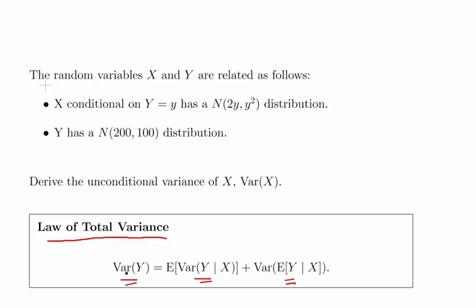The variance of Y can be written as the expectation of the conditional variance of Y dependent on X, plus the variance of the expected value of Y conditional on X. So it's the expected value of the conditional variance plus the variance of the conditional expectation. We're taking this as a statement of fact without deriving it.